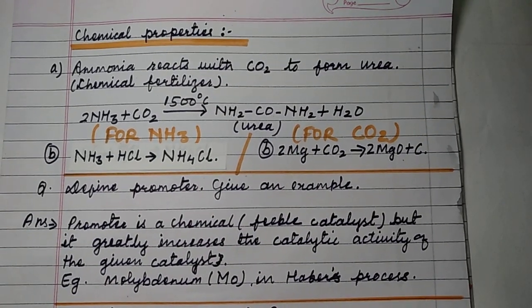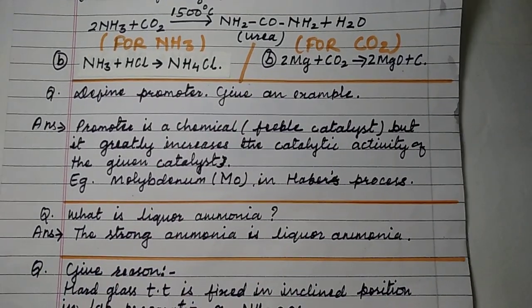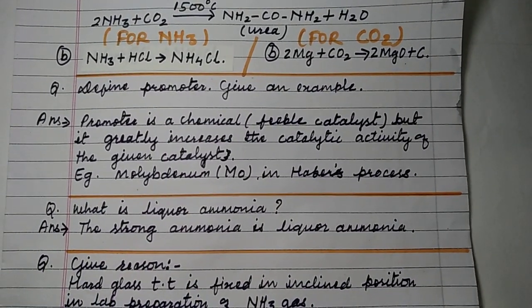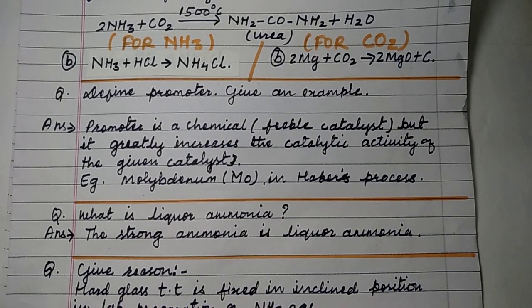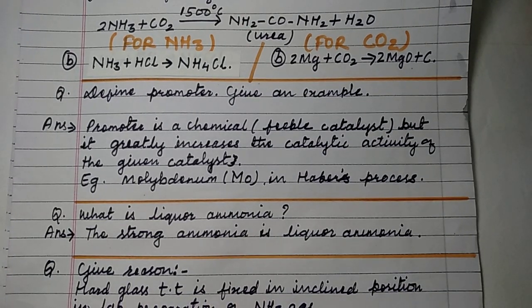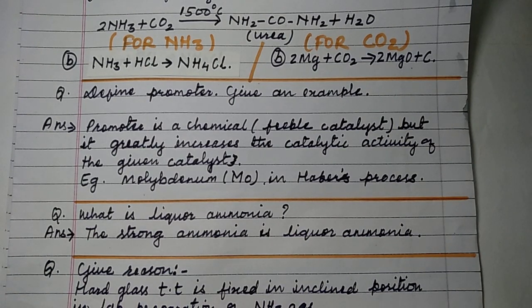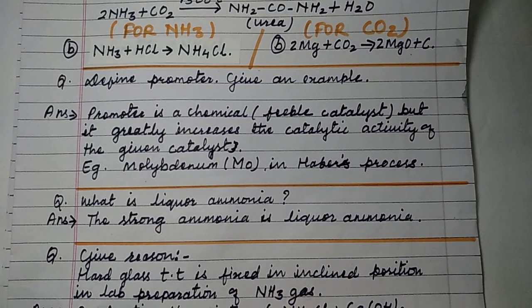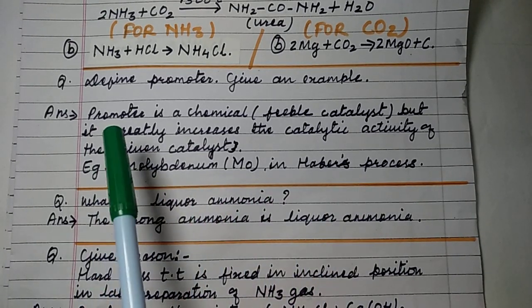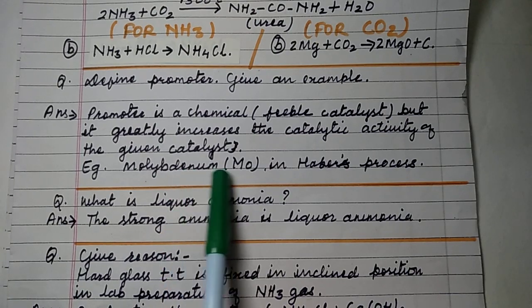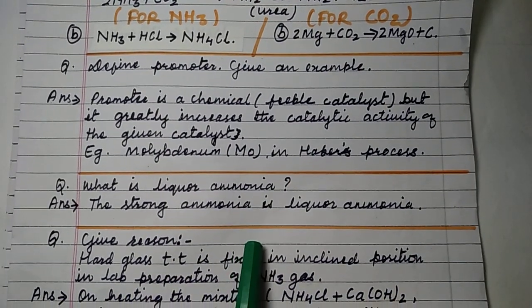Define promoter and give an example. A promoter is a weak catalyst — a chemical substance that greatly increases the catalytic activity of the main catalyst. Example: molybdenum (Mo) is used as a promoter in Haber's process.